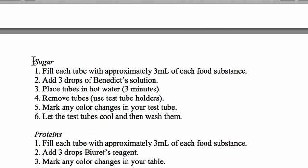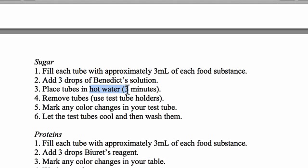For the sugar experiment, I want you to call it the Benedict's test. Again, you start with three mils of a food substance — we're practicing great controlled experiments. After adding three drops of Benedict's solution, we're going to place those test tubes in hot water for about three minutes, then use test tube holders to remove those tubes so we don't burn ourselves, and then mark any color changes in our data table.